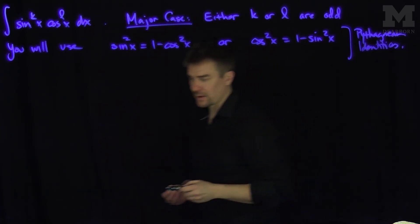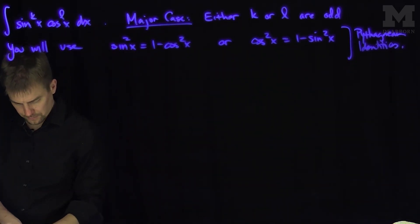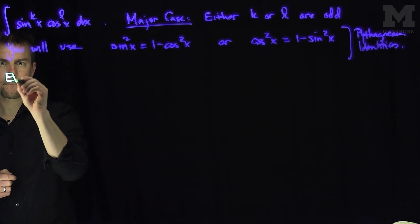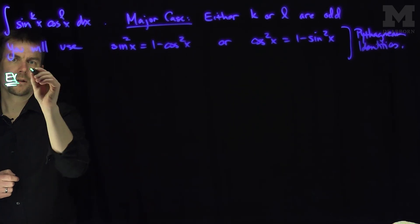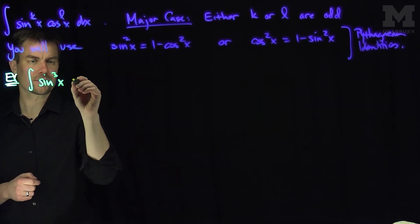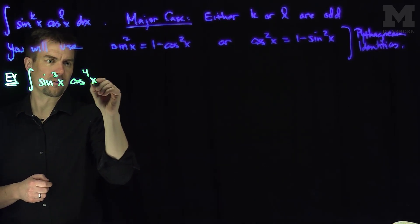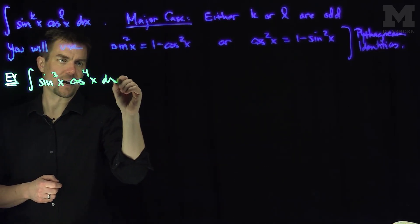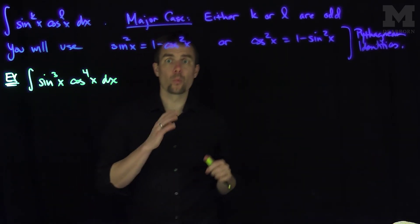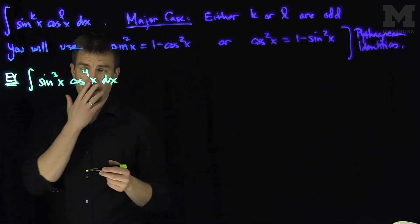Let's see how this comes up in an example — two examples, maybe. Here's the first example: let's find the integral of sine cubed of x times cosine to the fourth of x dx. We're in a situation where one of the exponents of sine or cosine is odd — 3 is an odd number.